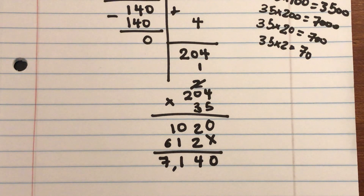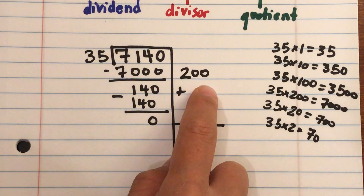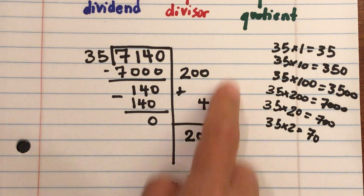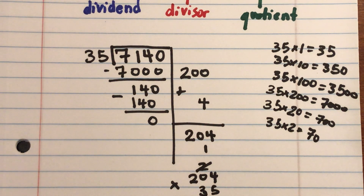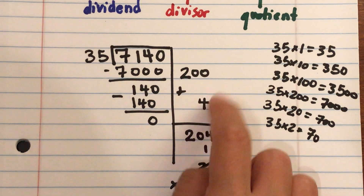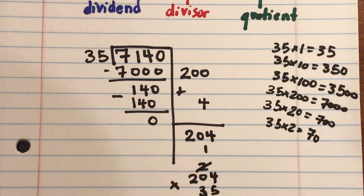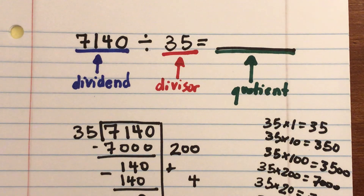Partial quotients is very similar to the standard algorithm for division. The main difference is where you place your numbers: instead of writing partial answers above the dividend, you write them to the right-hand side. You're still subtracting, but you're finding each individual part of the quotient step by step and adding them at the end — writing 204 all at once rather than digit by digit. The conceptual aspect is easier with partial quotients, though you may need to retrain your brain if you're used to the standard algorithm.